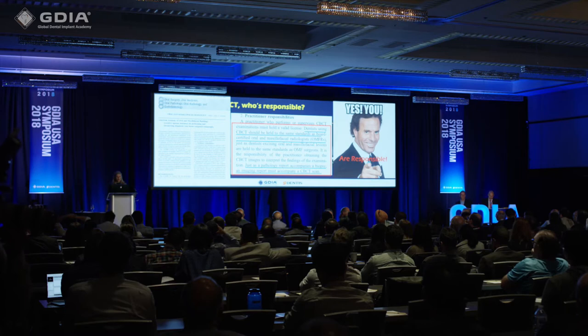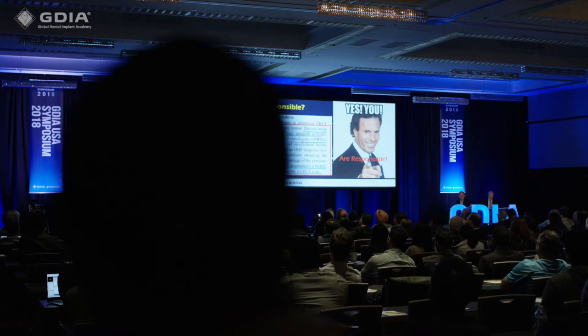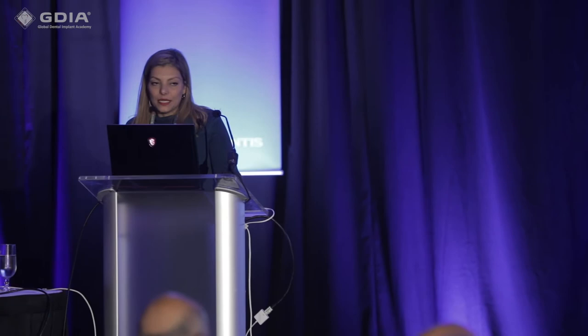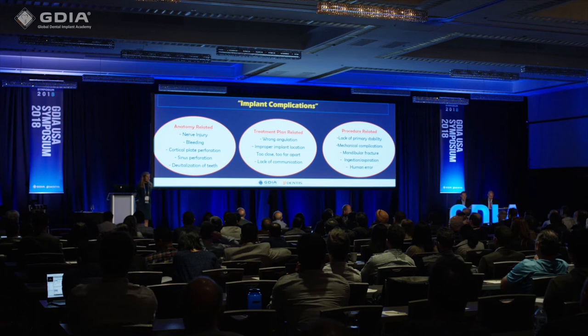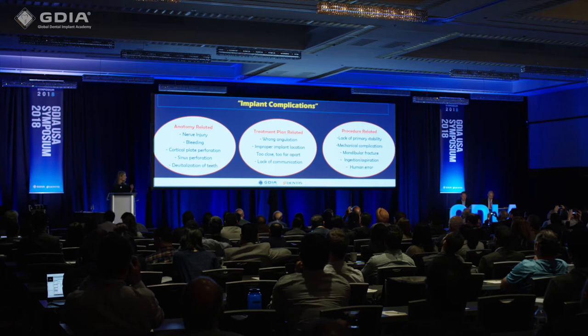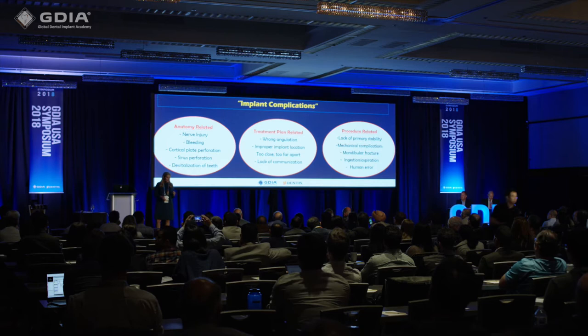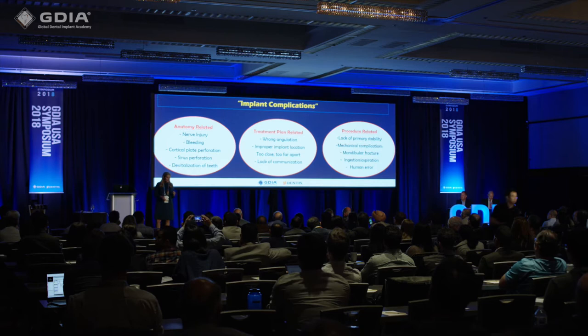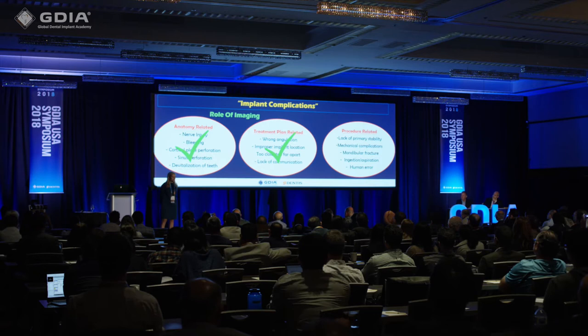Implant-related complications fall into three categories: anatomical — nerve injury, bleeding, sinus perforation; treatment planning — implants too close, wrong angulation; and procedural — lack of stability and mechanical complications. Imaging can help with anatomical and treatment-related problems and can predict primary stability. This conference's theme is how to prevent complications — both complications for patients and complications for practitioners.